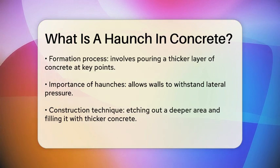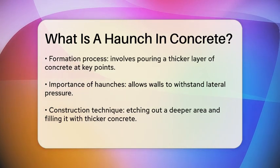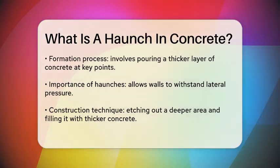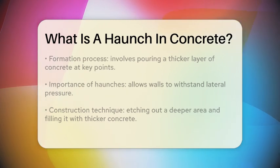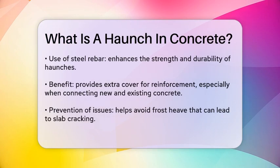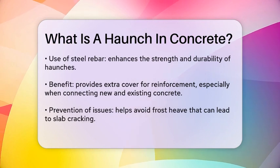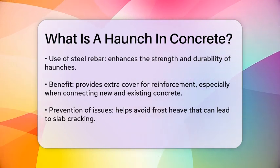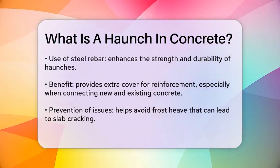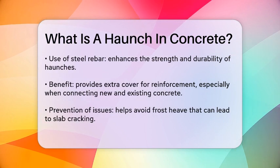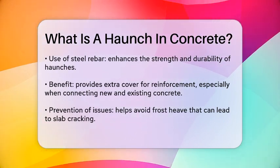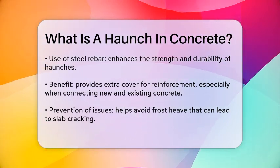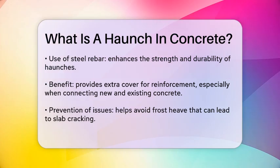In practical terms, haunches are formed by etching out a deeper area in the concrete and then filling it with a thicker layer of concrete. This process often involves placing steel rebar through the haunch to enhance its strength and durability. One of the key benefits of haunches is that they provide additional cover for the reinforcement, which is crucial when connecting new concrete slabs to existing foundations.